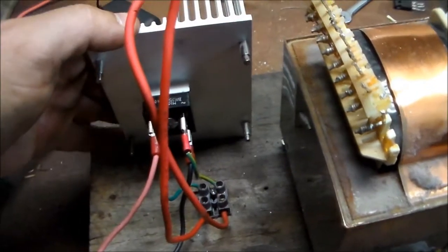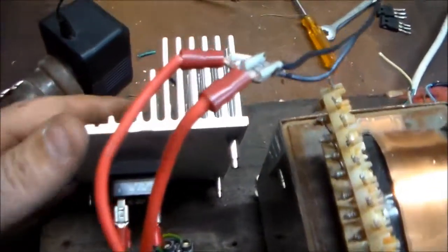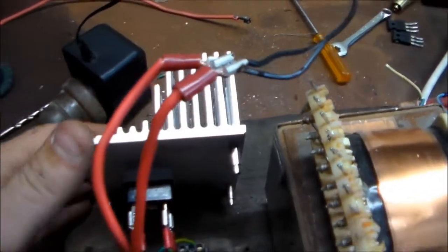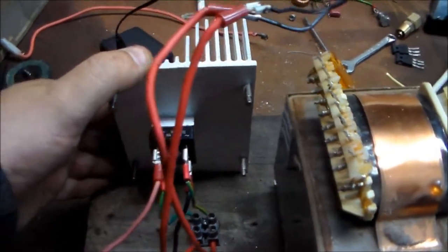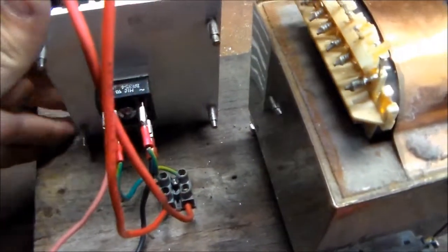I put a heatsink on the bridge rectifier. It just happens to be a heatsink from a G4 Macintosh, a dual G4 I think it was. And as you can see there, the CPU die, the heatsink perfectly fits that bridge rectifier. So it's like it was meant to be.